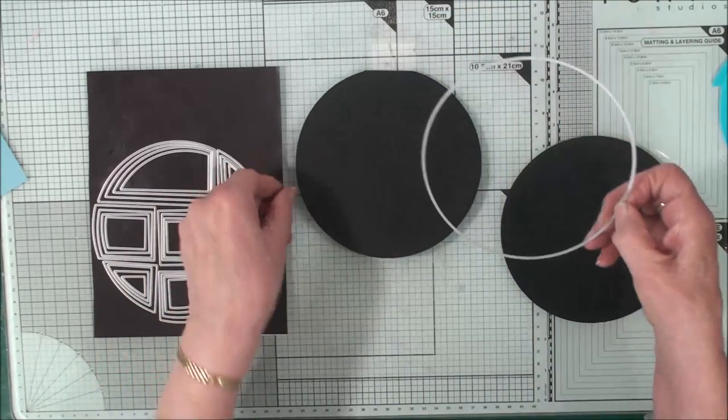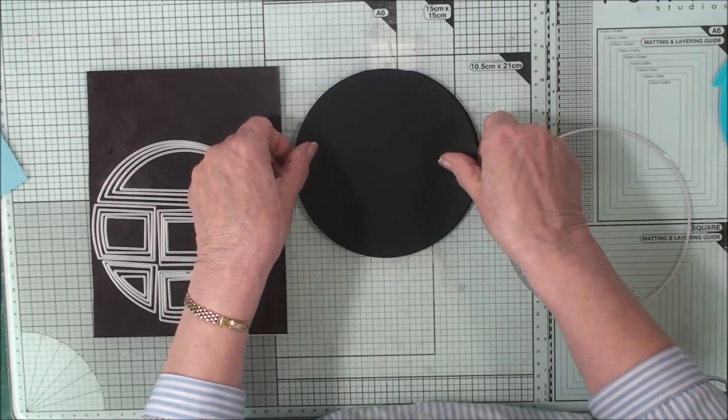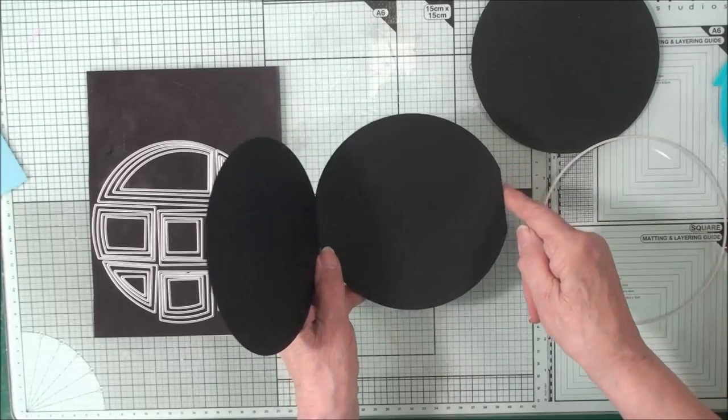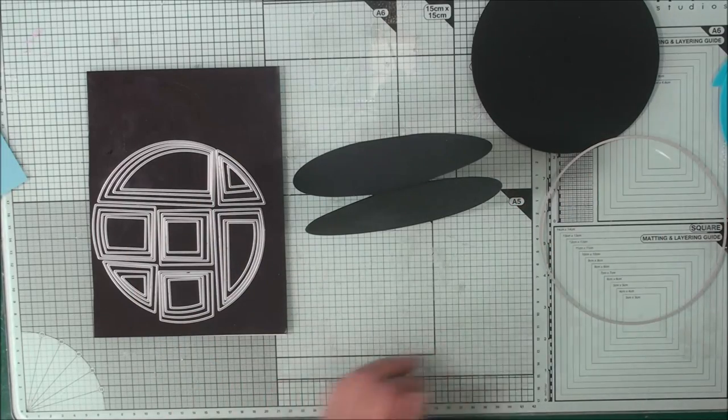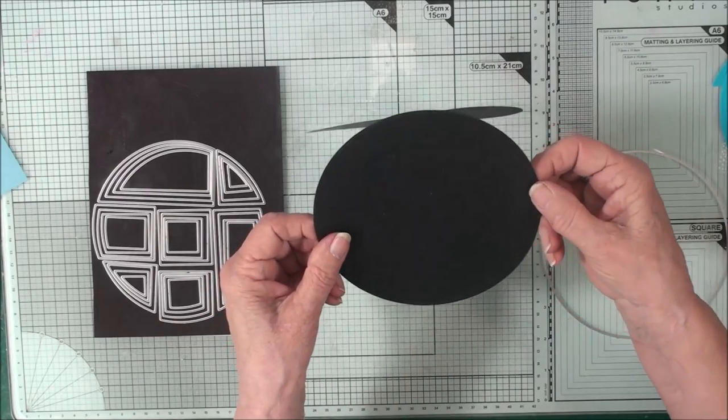Using the same die I've cut another circle in black and that will sit on the front of my card. With the back of the card now level you'll find that that will stand no problem at all, and this is the front that will attach to it but not yet.